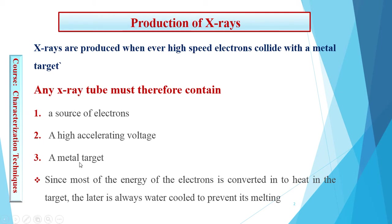A metal target is used as a source of emission of the X-rays. When these high-energy electrons fall on the target surface, due to the excitation and de-excitation of the electrons, X-rays are produced. Since most of the energy of the electron is converted into heat in the target, the target is always water-cooled to prevent its melting.